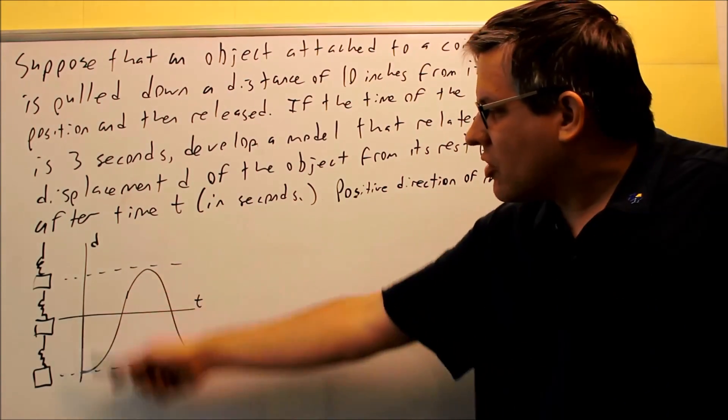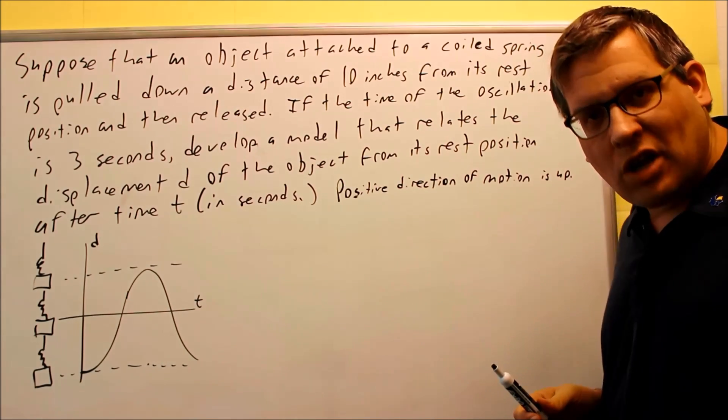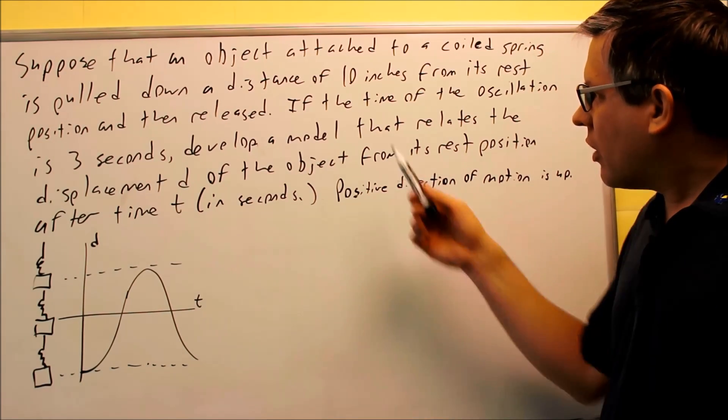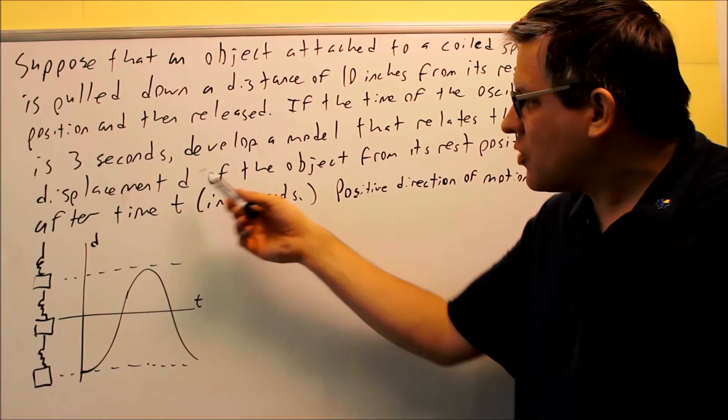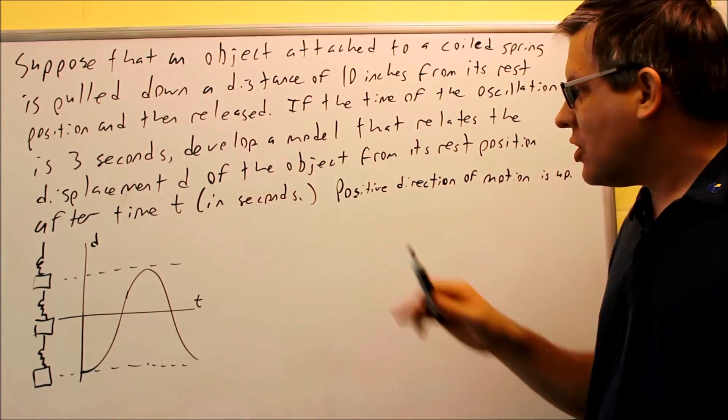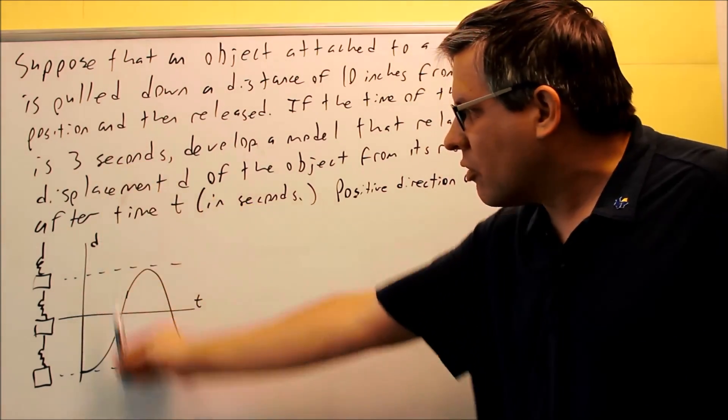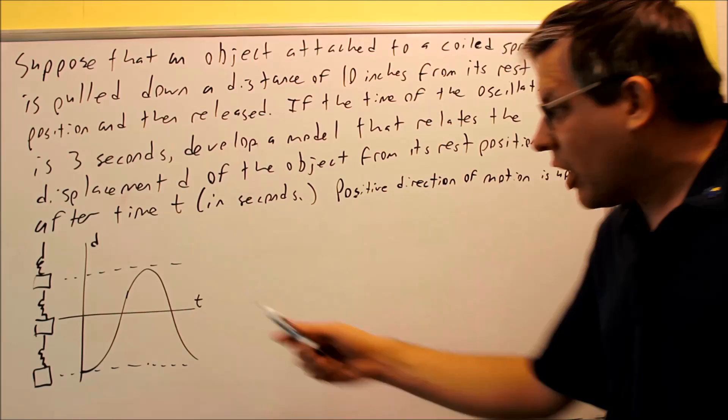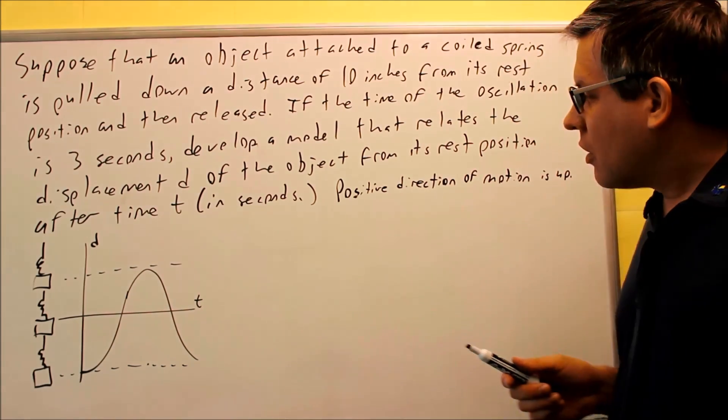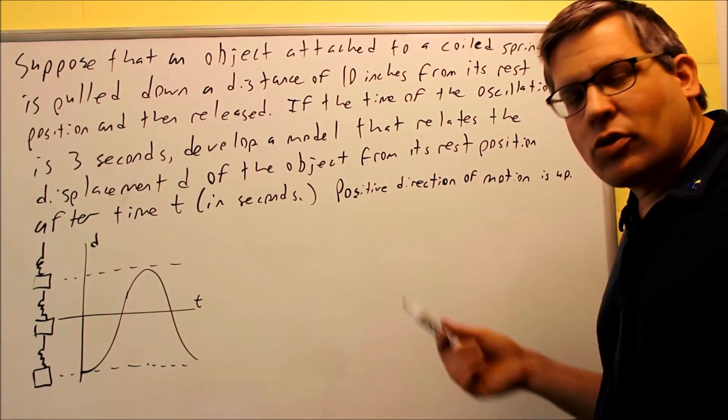So when we release it, it's going to keep going up and down. It says the time of the oscillation is 3 seconds, that's our t. They want us to develop a model that relates displacement d of the object from this rest position after time t in seconds. It says positive direction of motion is up. That makes sense here because going up with a regular traditional graph would be positive anyway. So this is basically the whole problem, now all we have to do is come up with a model.